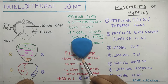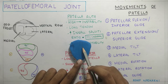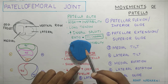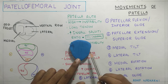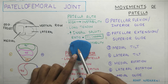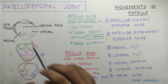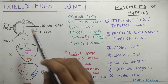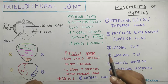The patella is a triangular bone which has an apex inferiorly and base superiorly. If you look at it posteriorly, it has an odd facet on the medial side and also a vertical ridge which divides the medial and lateral articulating surfaces, which are more convex. These are the medial and lateral articulating surfaces, this is the odd facet on the medial side, this is the apex, and this is the base of the patella.